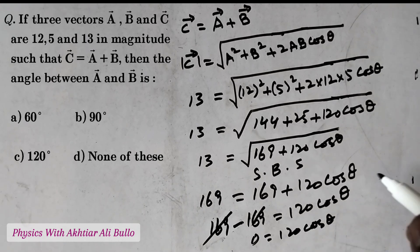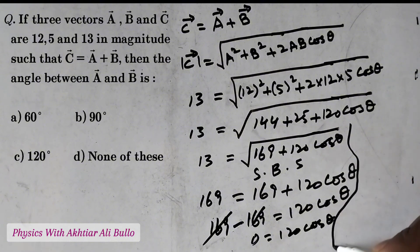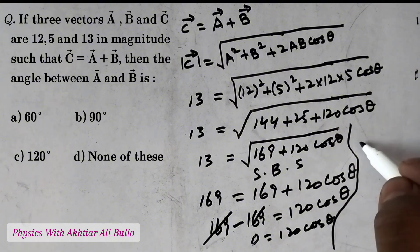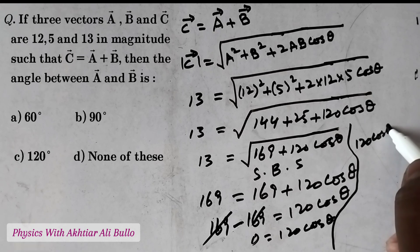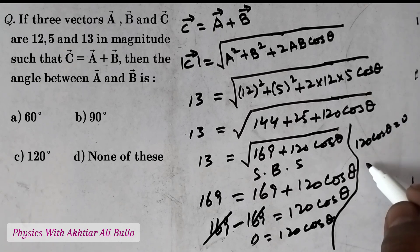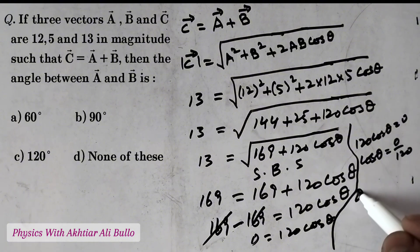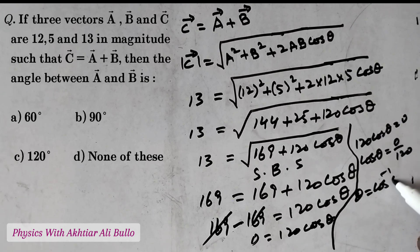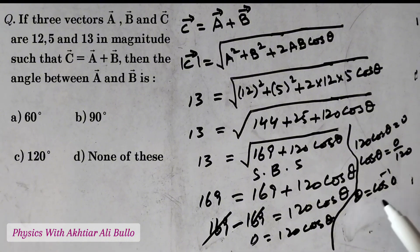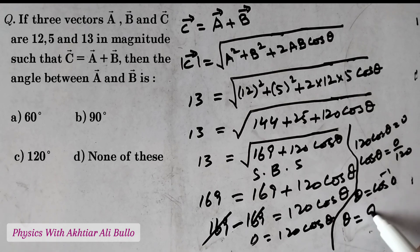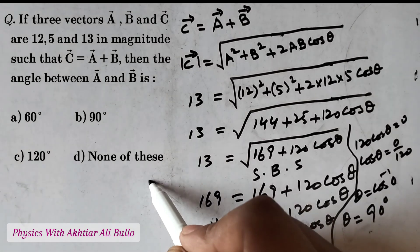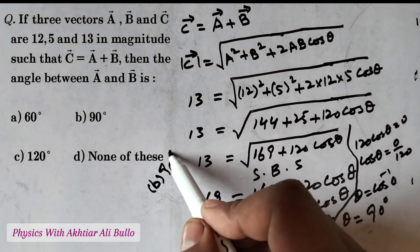We have to find the angle. From 120 cosθ equals 0, cosθ equals 0 divided by 120, which equals 0. Therefore θ equals cos inverse of 0, and the value of cos inverse 0 is 90 degrees. So the correct option is B: 90 degrees.